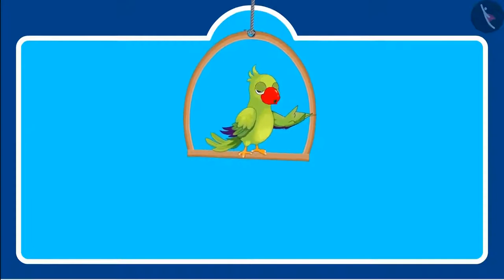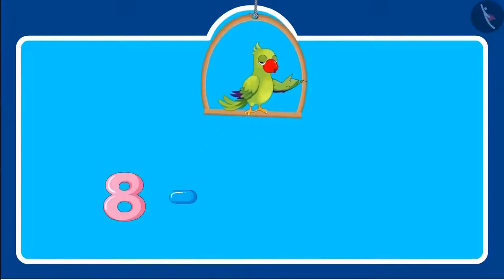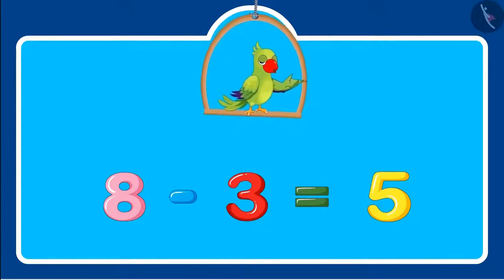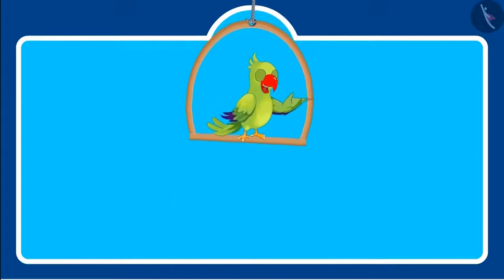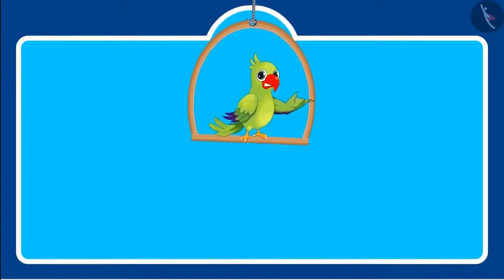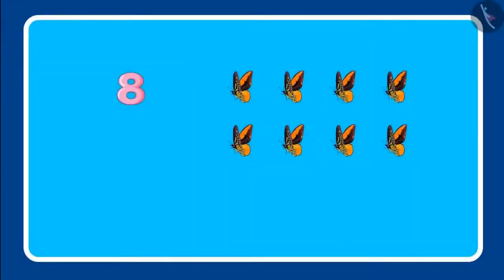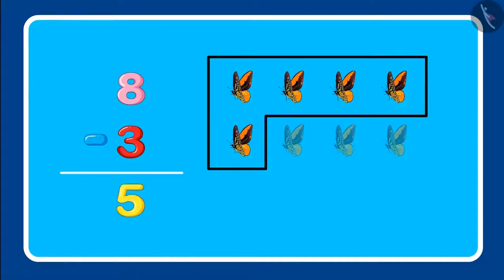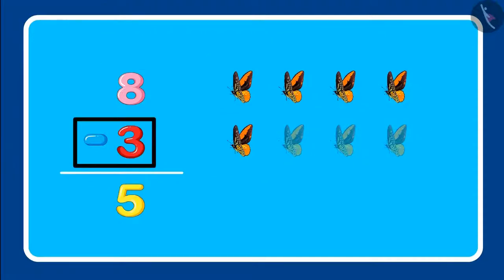Can you write this in a systematic way? This is how we write it: 8 minus 3 equals 5. We can also write it in another way. First, there were a total of 8 butterflies, so we write the total number on top. Then, 3 butterflies flew away, so below the total number we put the subtraction sign and write the number that got reduced. Then we write the remaining number, which is 5 butterflies. From 8 butterflies, 3 butterflies flew away, so 5 butterflies were left.